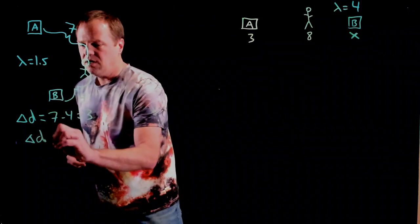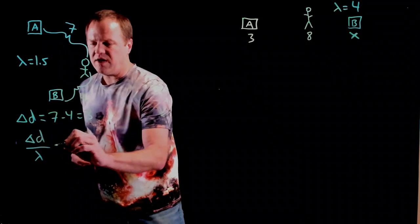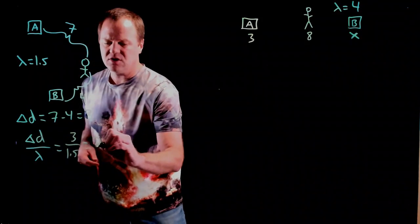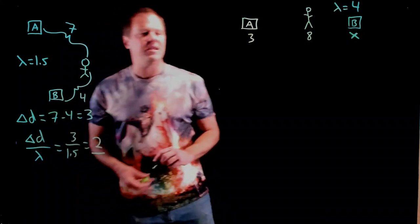So, delta D over the wavelength will be 3 over 1.5, giving us 2. Okay, so that is an integer. Therefore, it is constructive interference.